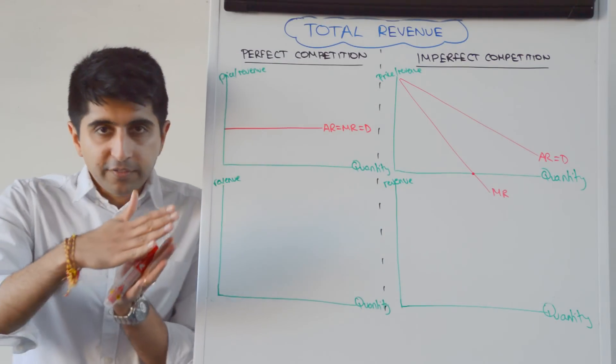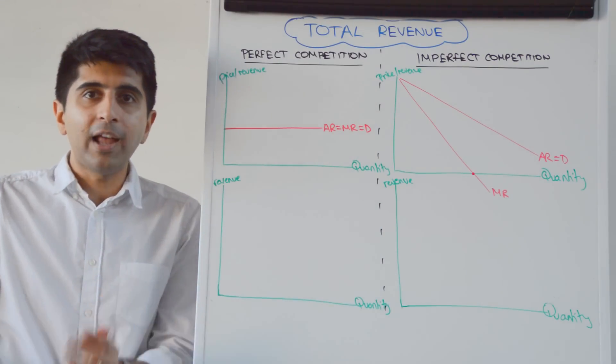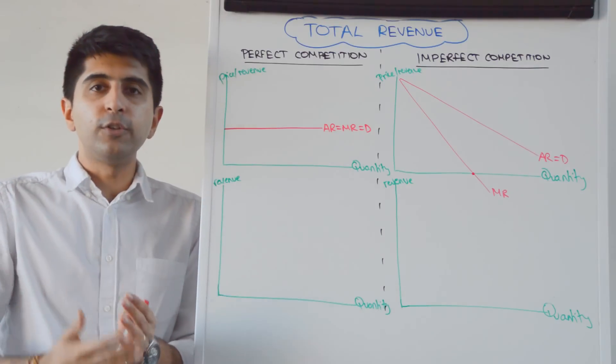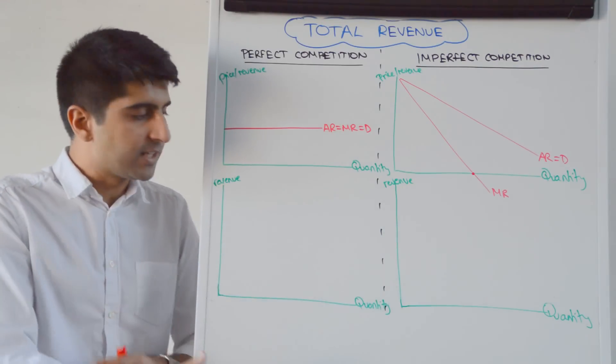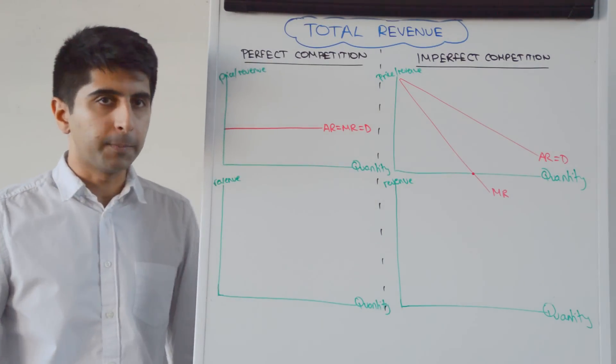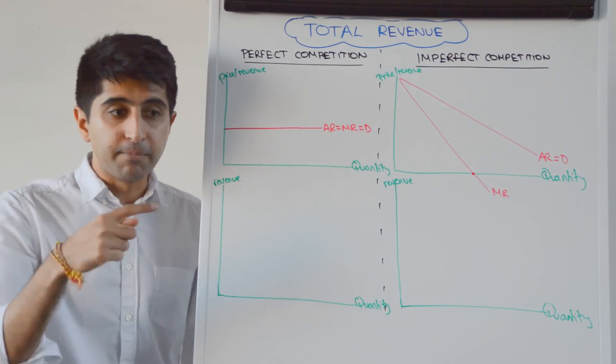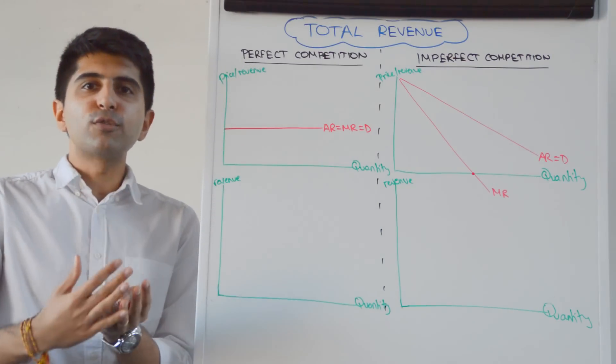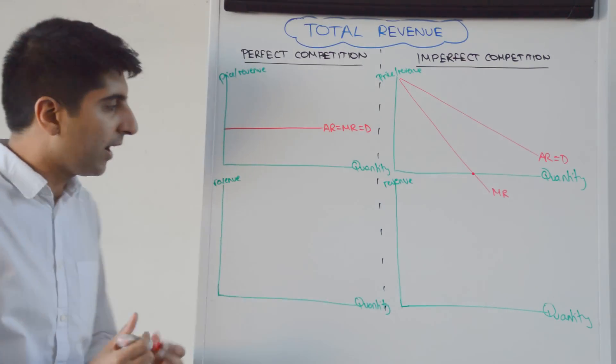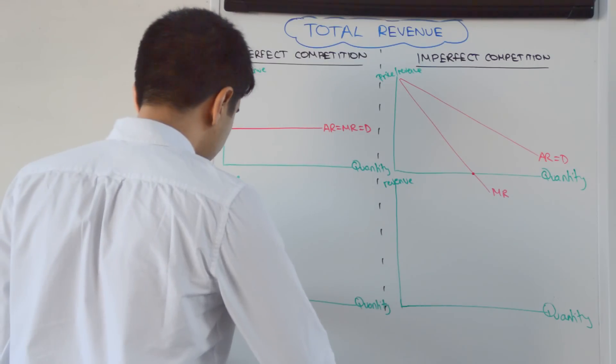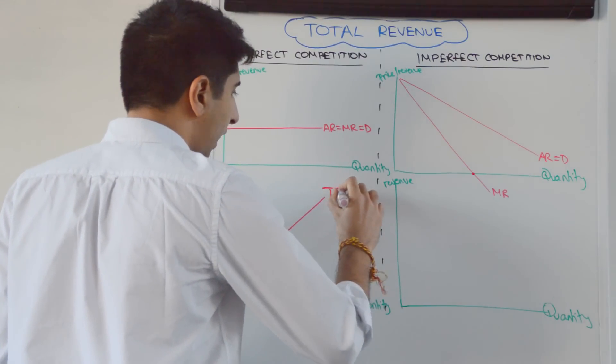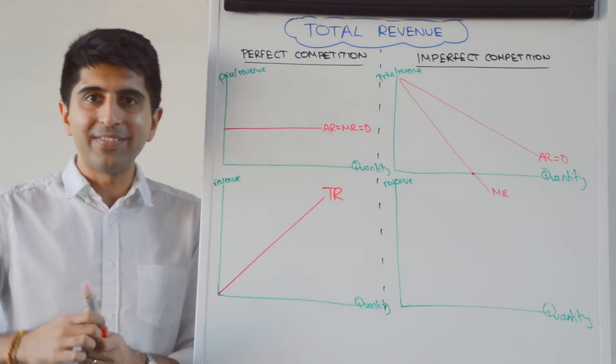So if our MR curve is constant at one value, it means that total revenue is going to be increasing at the same rate as more units are being sold. Exactly the same rate. If marginal revenue is constant, total revenue will be increasing at the same rate each time, which means that total revenue is going to look like this: an upward sloping linear line at the same gradient.